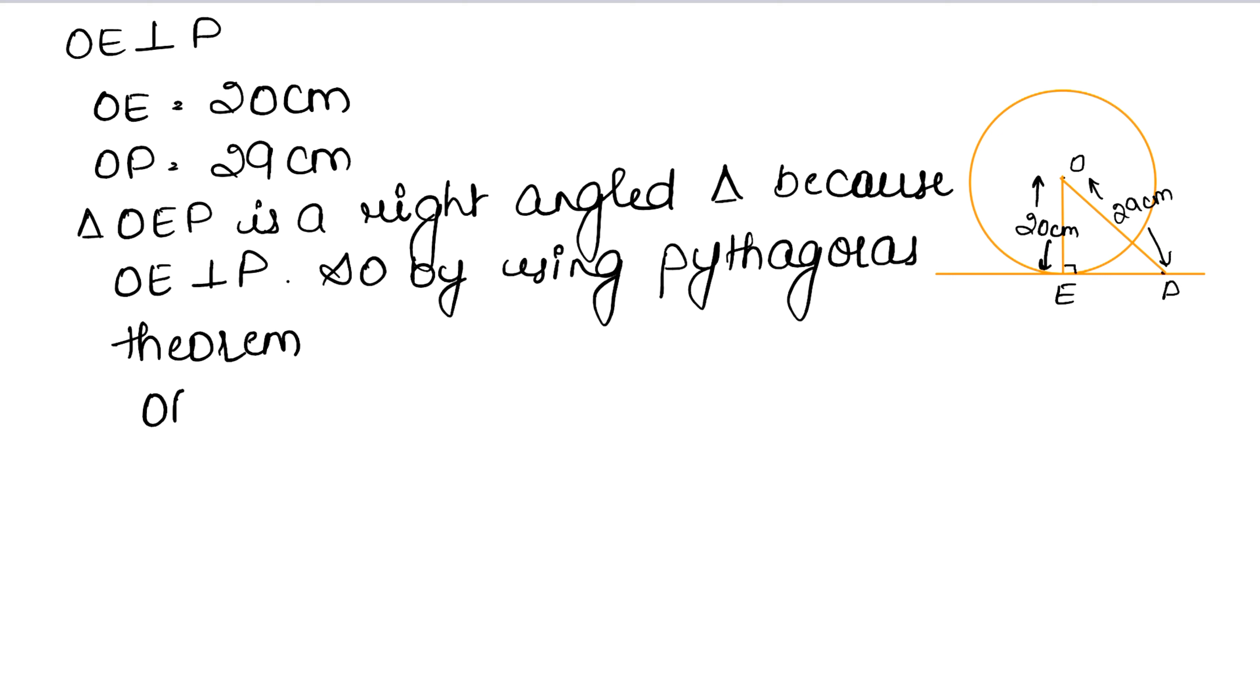According to Pythagoras theorem, what is OP? OP square equals OE square plus EP square. So OP was how much? 29 whole square equals OE is 20 whole square plus EP square.